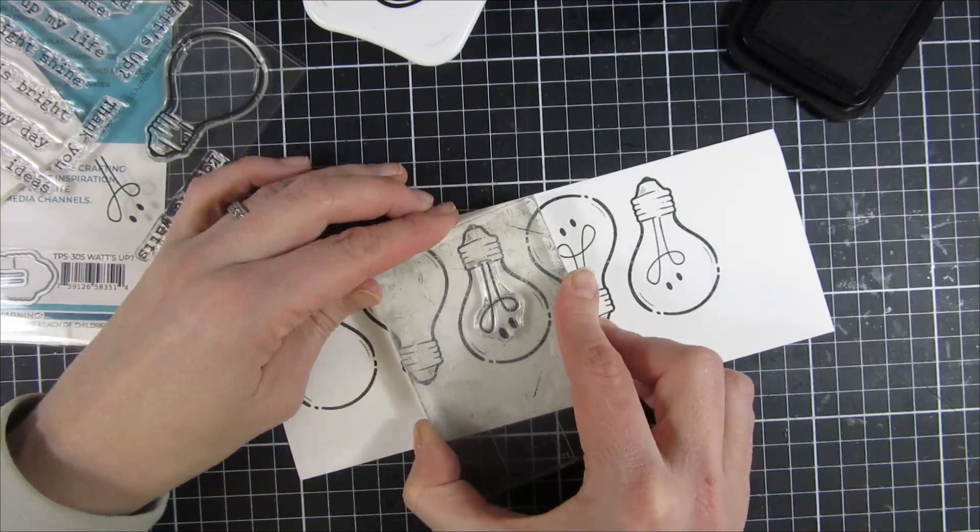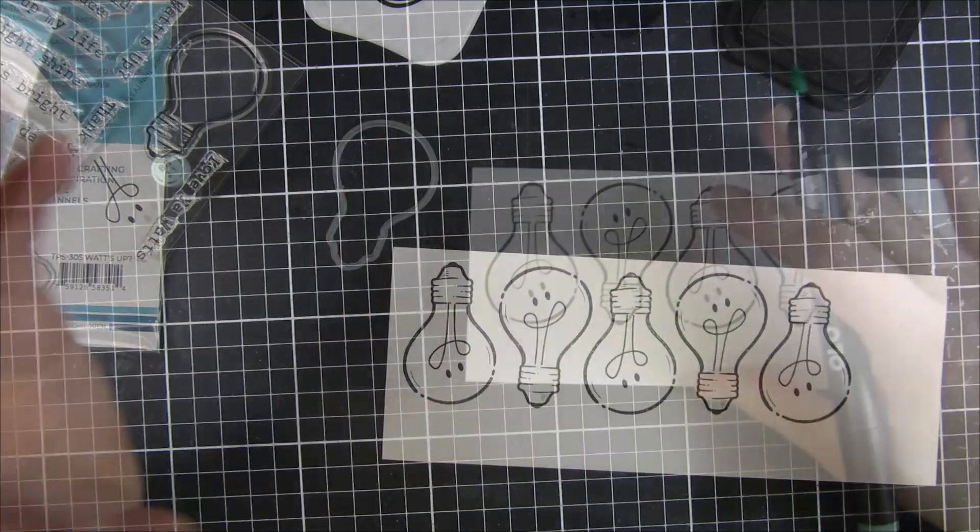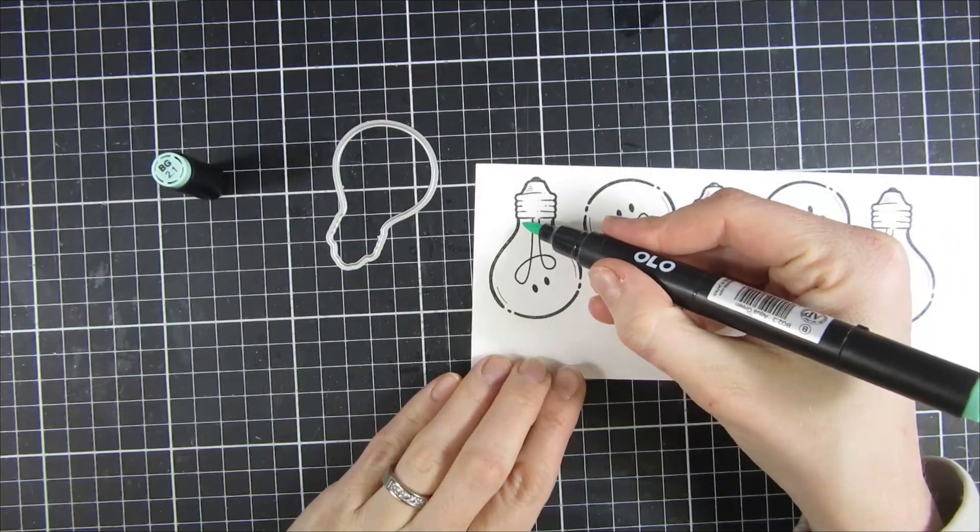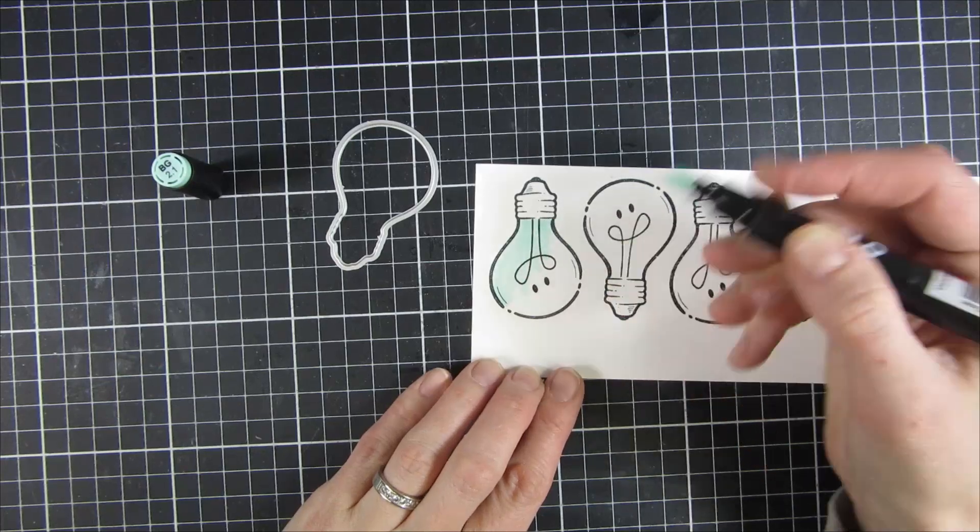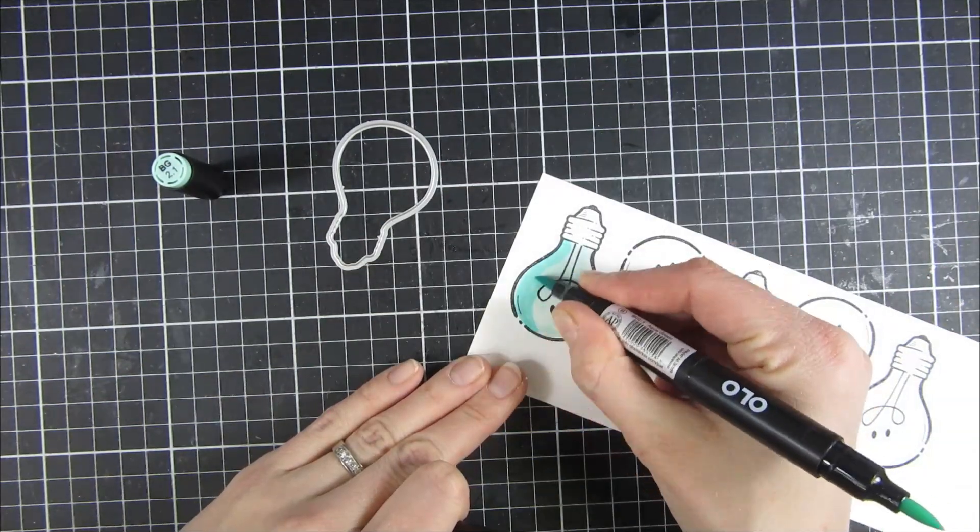You can see I'm going around just stamping it out, and then I will create rainbow-colored light bulbs here.